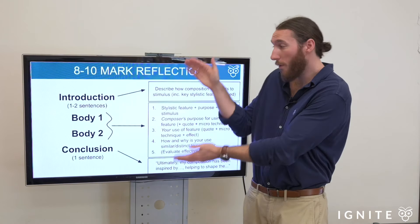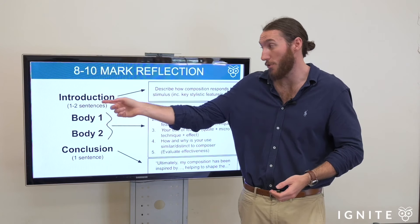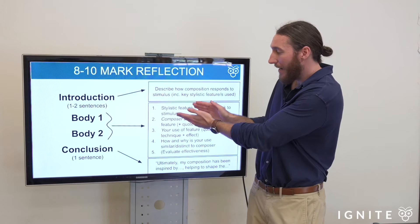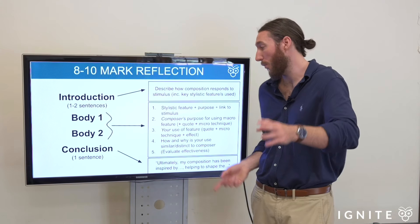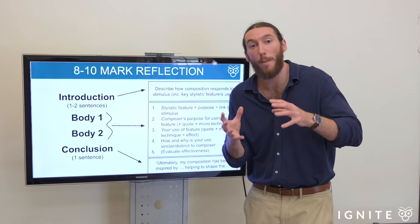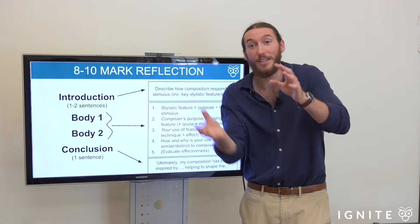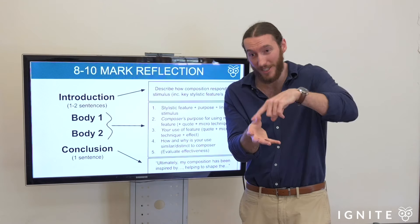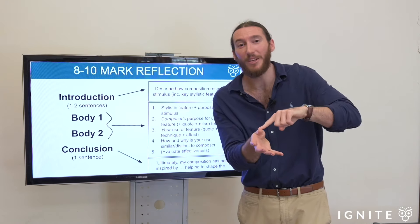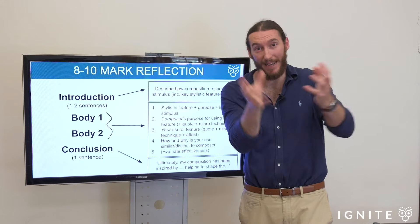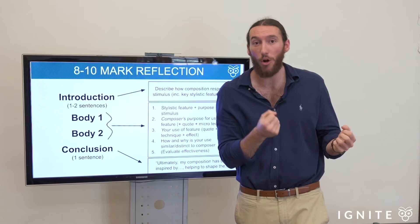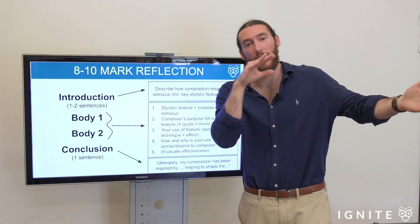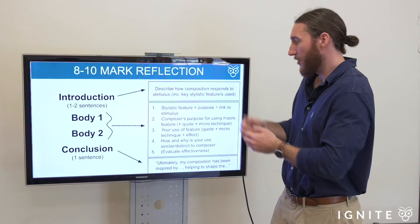I typically structure the whole reflection like this: we do an introduction — one to two sentences, which we're going to go through today — two body paragraphs, and a one-sentence conclusion. Very simple. In the two body paragraphs, you are outlining the stylistic elements, and you can pause the video at this point if you want to read through that, but then you're getting evidence from both the prescribed text that you studied and from your own text that you just composed in Part A. That's the critical thing — you're now studying your own text in the same way that you're studying someone else, pulling evidence from each, explaining why you did it and how you were inspired by that particular composer.